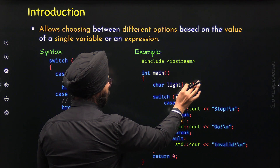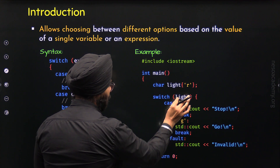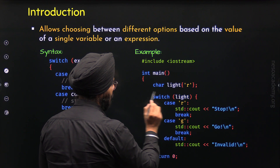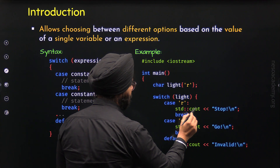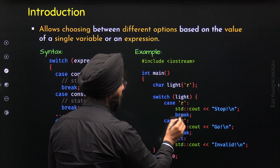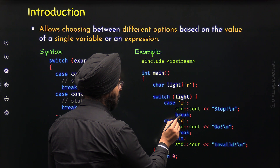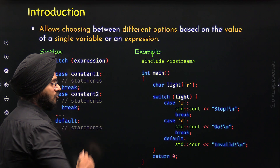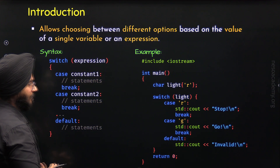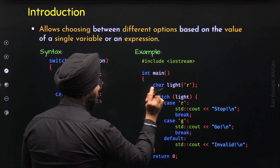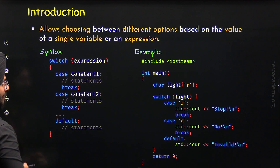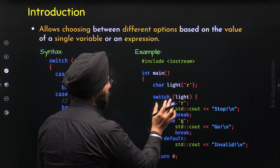We know that the value of this variable is compared with these case constants. We know that 'r' is matching with this 'r', therefore the statements of this case will execute. We have the std::cout statement and therefore we will get 'stop' on the screen. After this, we have the break statement. Because of this break statement, we will get outside of this switch. The break statement allows us to break out of the switch. This statement is needed if we want to execute just one case — break statement is part of the switch syntax.